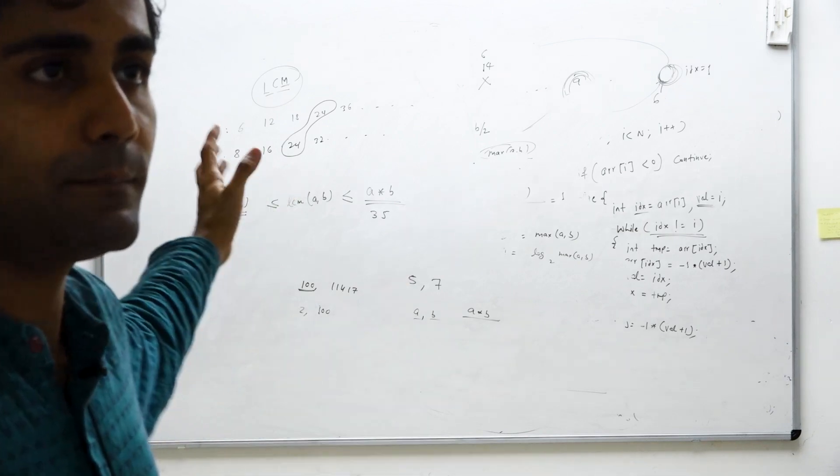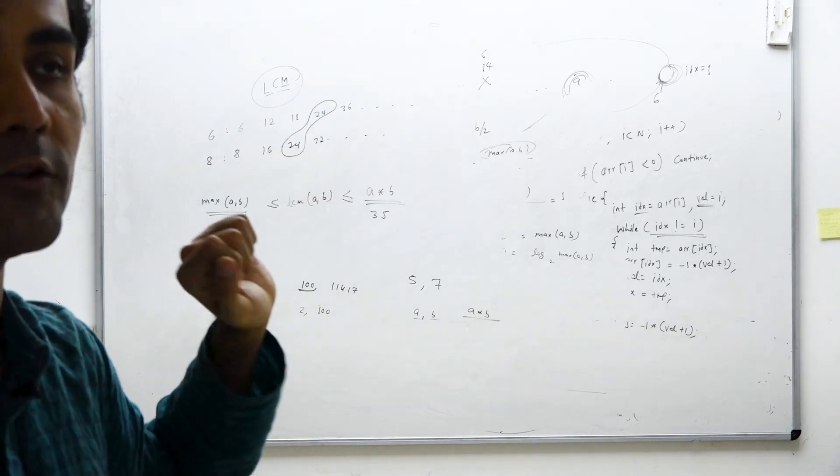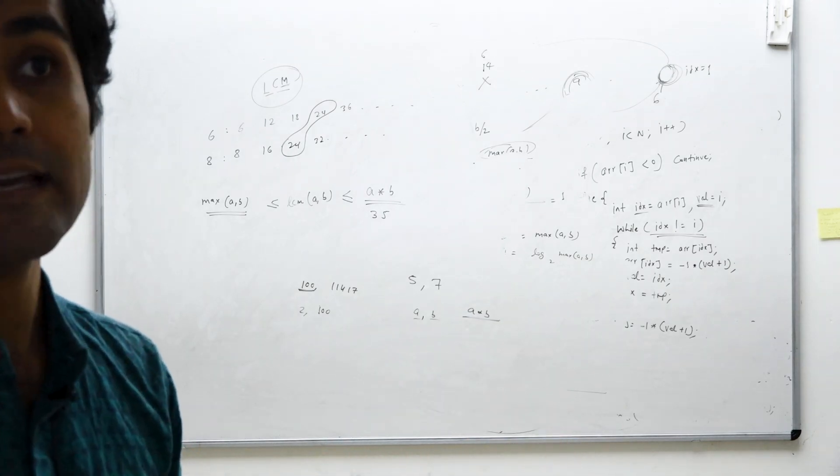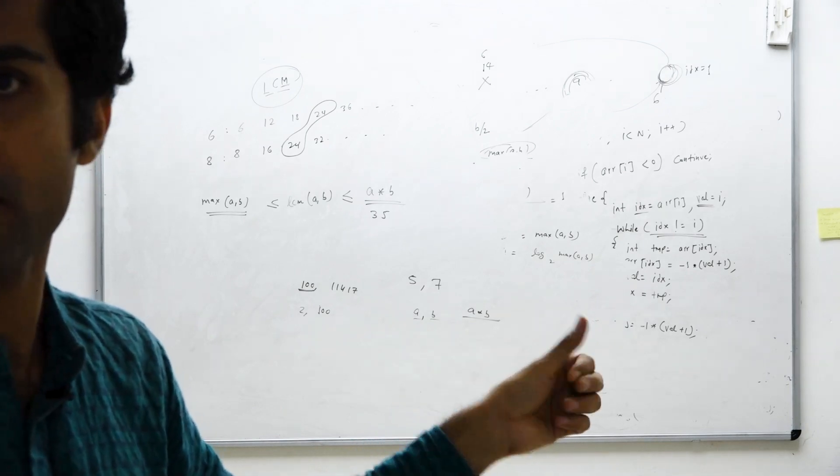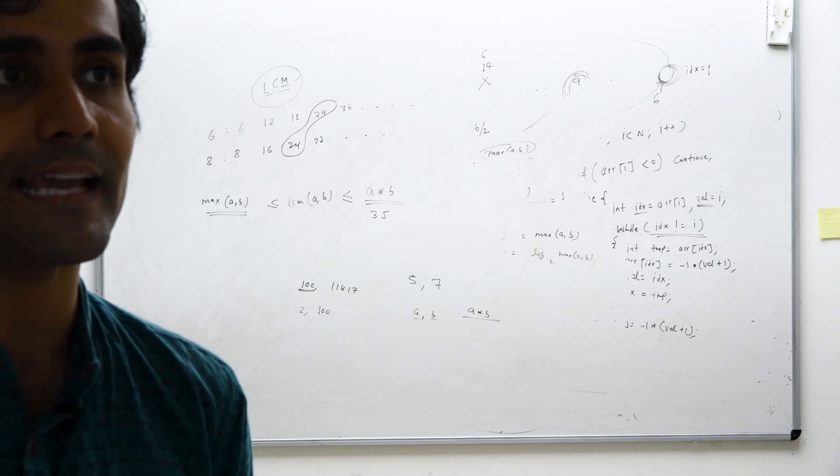Can I simply run a loop that starts from max of a comma b and goes till a into b? I can do that. I can simply write a loop that starts from max of a comma b and runs till a into b. Whatever is the first number which is divisible by a and b can be regarded as the lowest common multiple.